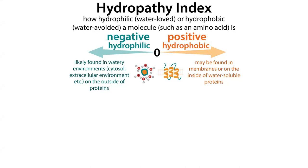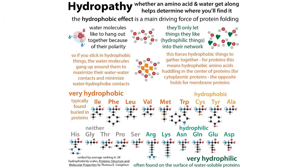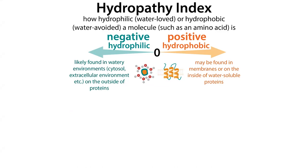Scientists like putting numbers on things, and one of the things we want to put a number on is hydropathy - how much a molecule is avoided by water. If something is hydrophobic, water avoids it, and if something is hydrophilic, water likes to hang out with it. We want to put a number to the hydropathy of various molecules such as amino acids, the individual building blocks of proteins. So we use this thing called the hydropathy index.